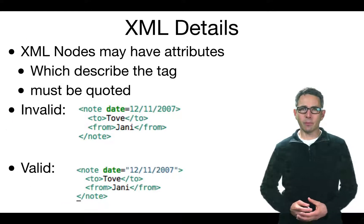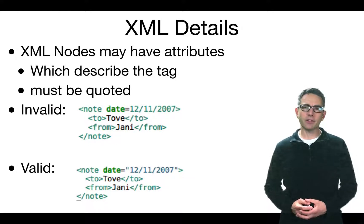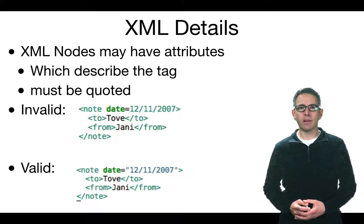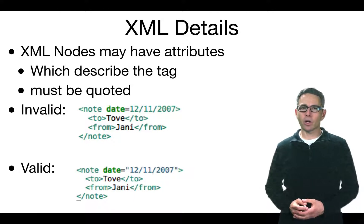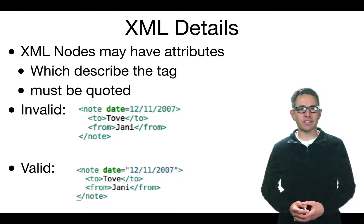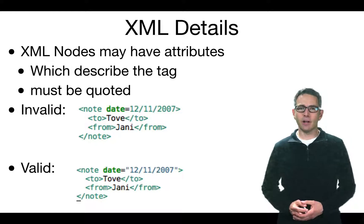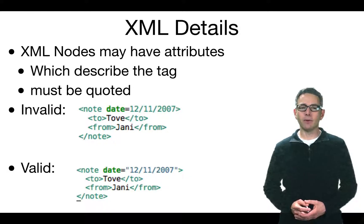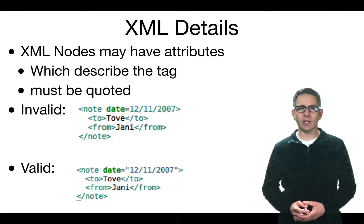Tags can also have attributes, which are descriptors that provide additional information about a tag. An attribute consists of a word in the opening tag followed by an equals sign and a quoted string value. For example, adding a date attribute to the note tag is invalid if the date string is not enclosed in quotes; the correct form encloses the value in double quotes.